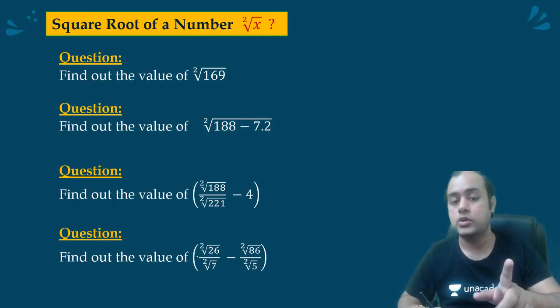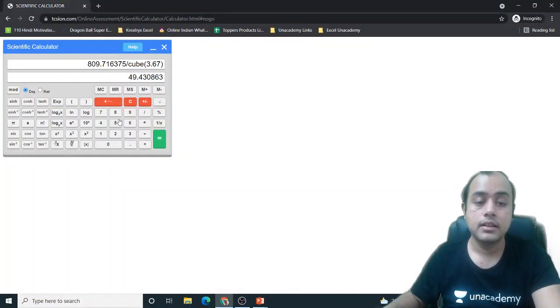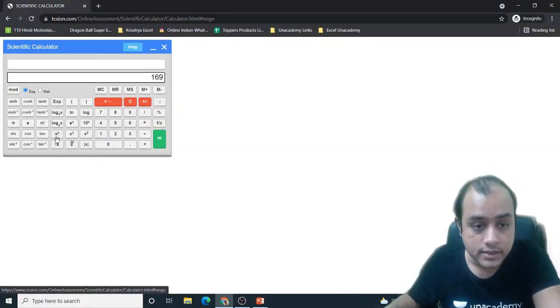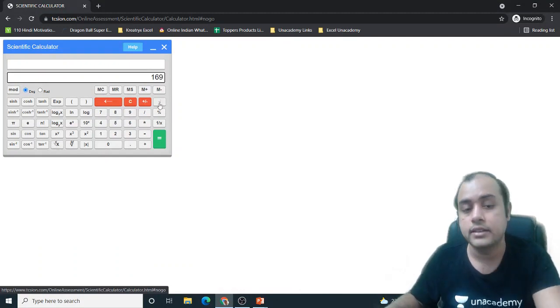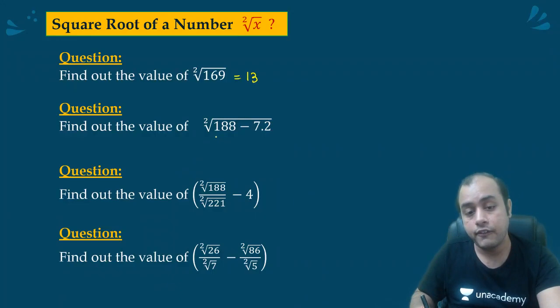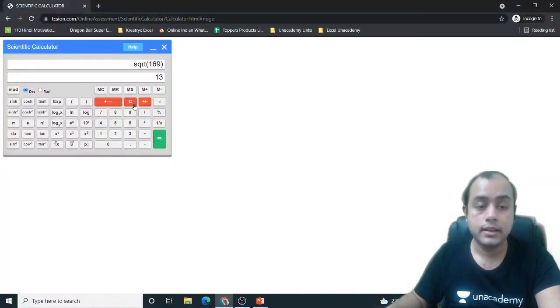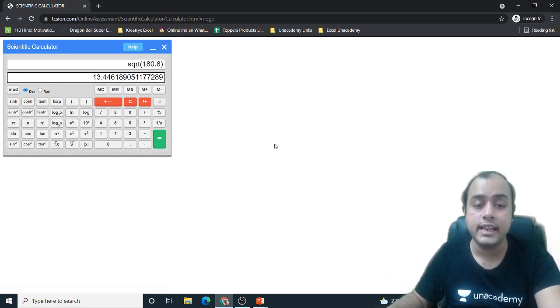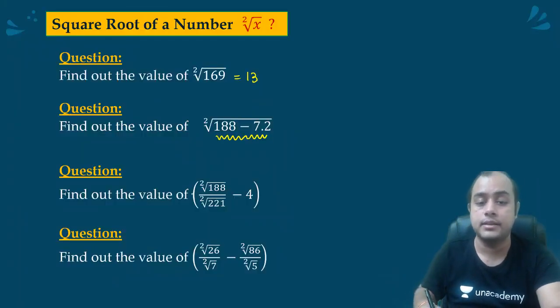Next, let us go after square root. Square root of 169. So we will follow the same process. 169, I will press square root. Where is it? Oh, it is here at the right side. 13. 188 minus 7.2. Clear it. 188 minus 7.2, press equal to, then take the square root, 13.4461.